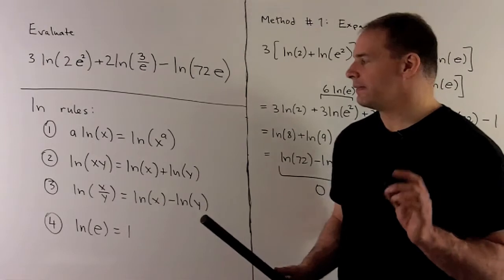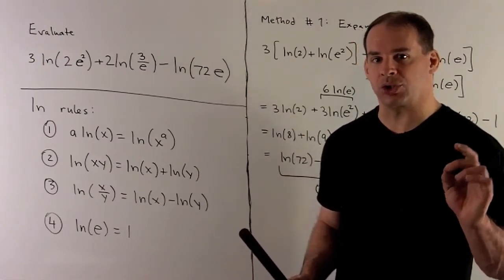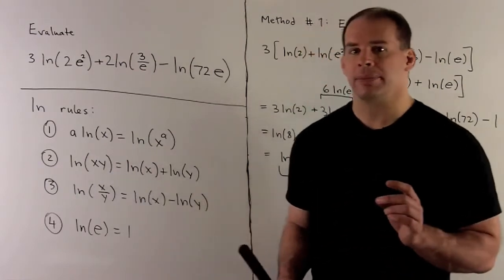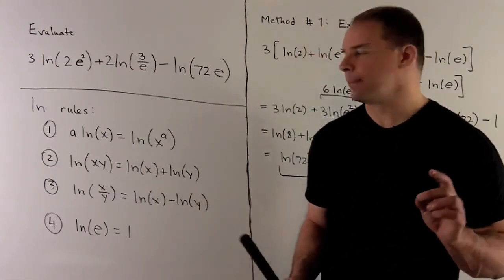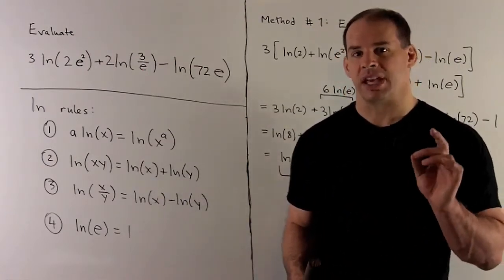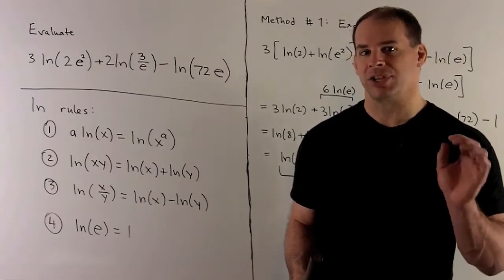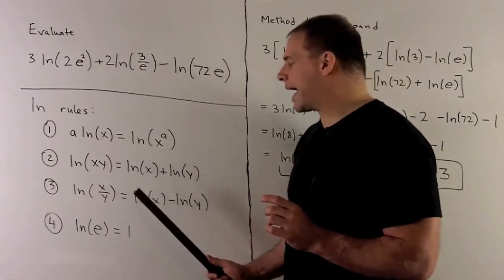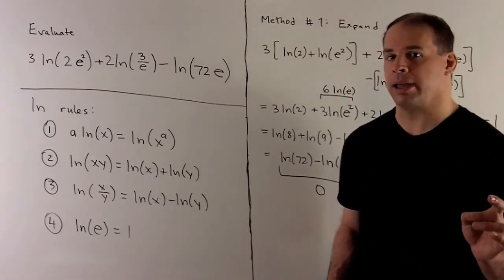Next rule: if I have the natural log of a product, I can write that as a sum of the natural logs. So natural log of x times y equals natural log of x plus natural log of y. Similarly, the natural log of a quotient equals the difference of the natural logs: natural log of x over y equals natural log of x minus natural log of y.